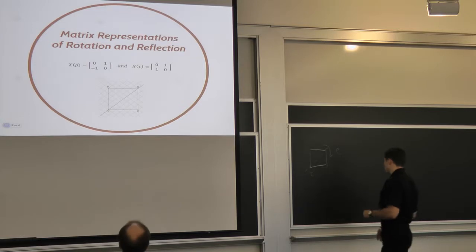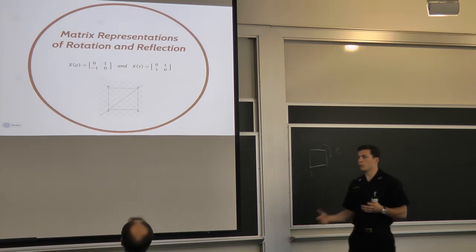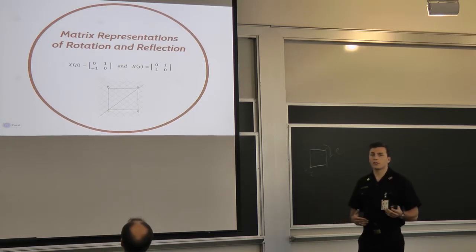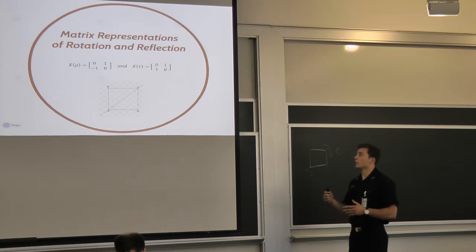So if you were to take the unit vector 1, 0 and you were going to rotate it, you're just going to get 0, negative 1. And if you were to reflect it about that line, you'd get 0, 1 if you apply that transformation matrix.